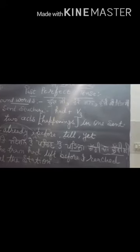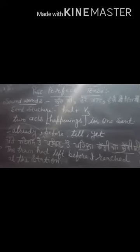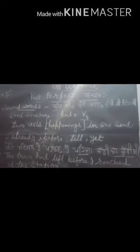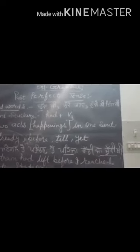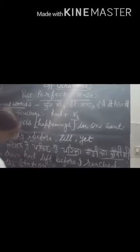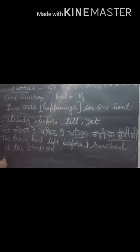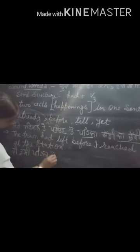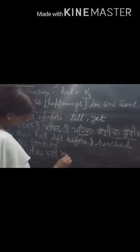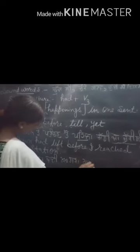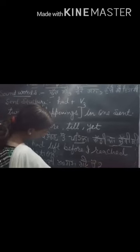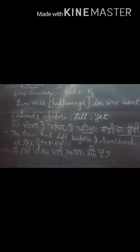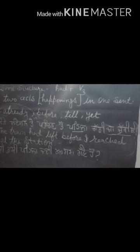Now the next sentence is negative sentence. We had already done the negative sentence. Now we will look at the interrogative sentence: ki tusi pehla kadhi aagra gaye ho. Somebody is asking me, have you ever been to Agra before.